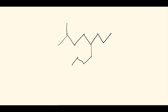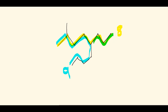This is our first example. The first thing we want to do is identify the parent chain, which is the longest chain of carbons we can find on this molecule. Comparing the yellow chain to the blue chain: the yellow one is eight carbons long, and the blue one is nine carbons long. If we double-check with the green one, it's also eight, so the blue one truly is the longest chain.